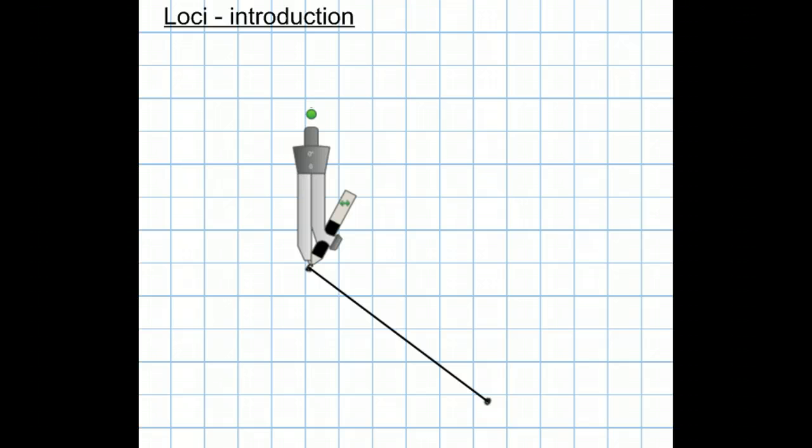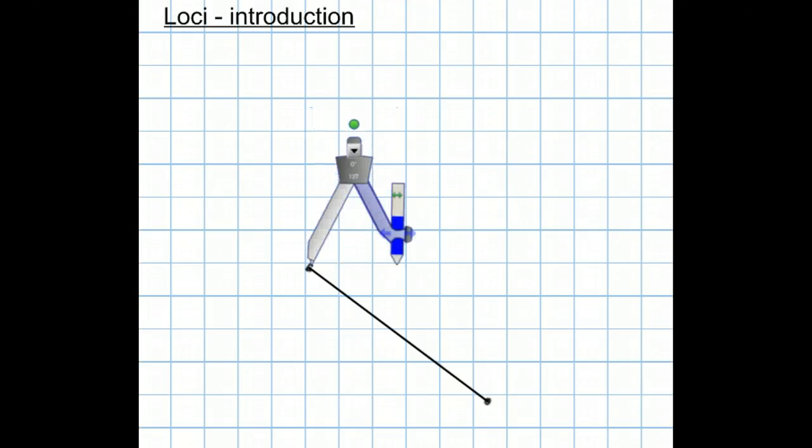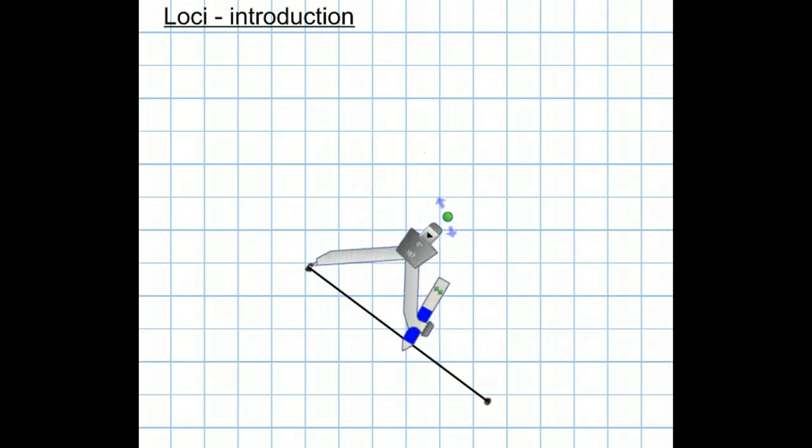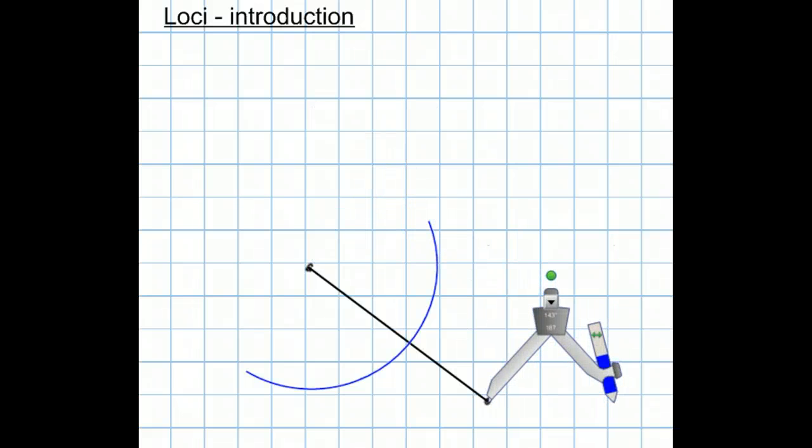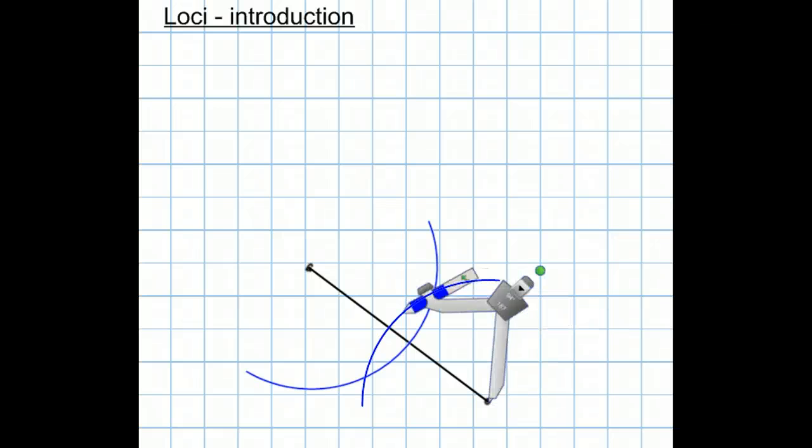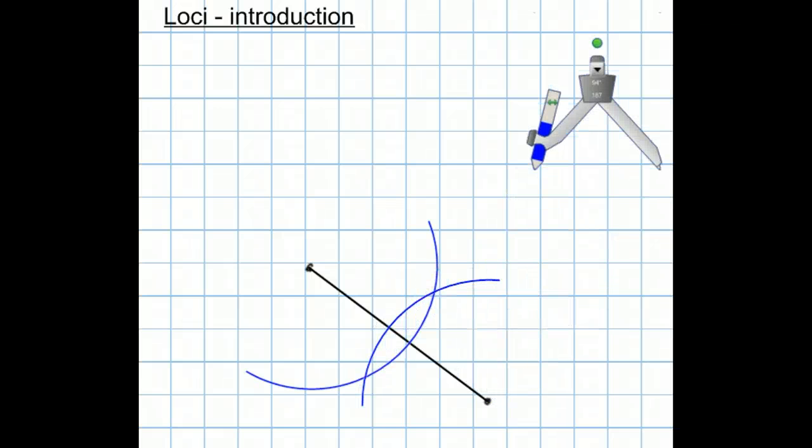Put a compass on one end. We then extend the compass so it's a bit more than halfway. And we draw an arc, part of the circle. Then without changing the width of the compass, I draw a second arc.